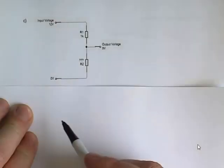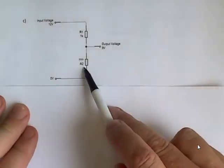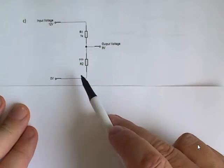So another example, in this case I know the input and the output voltage, but I don't know one of the resistance values required to give that output voltage.